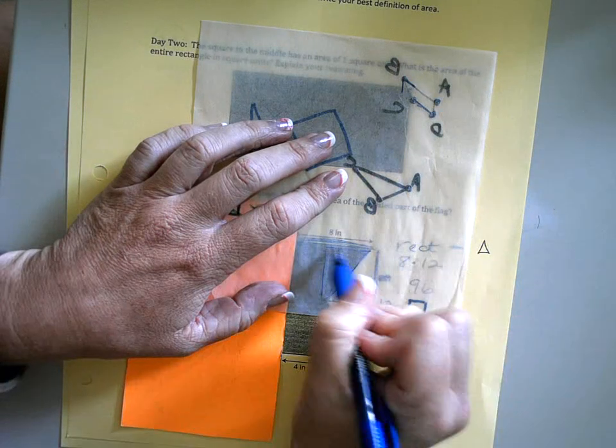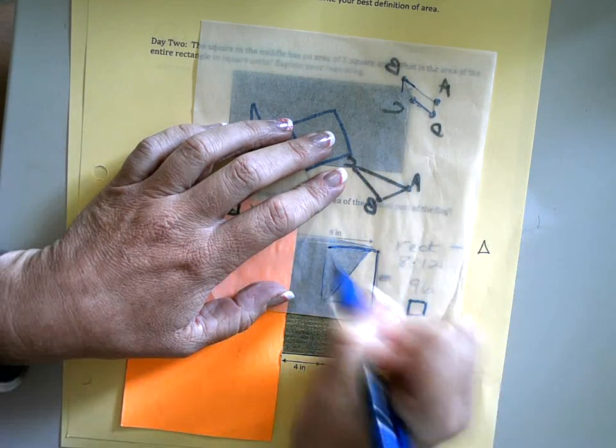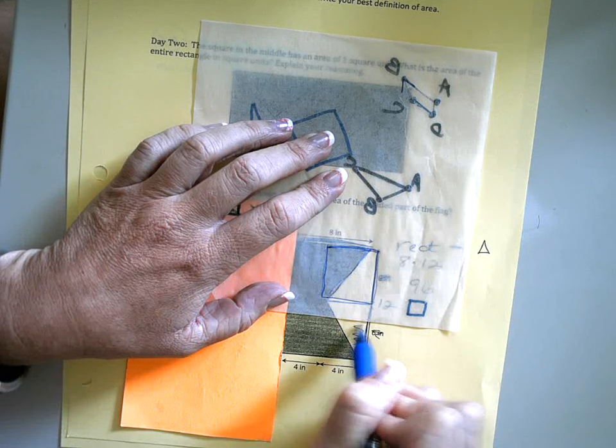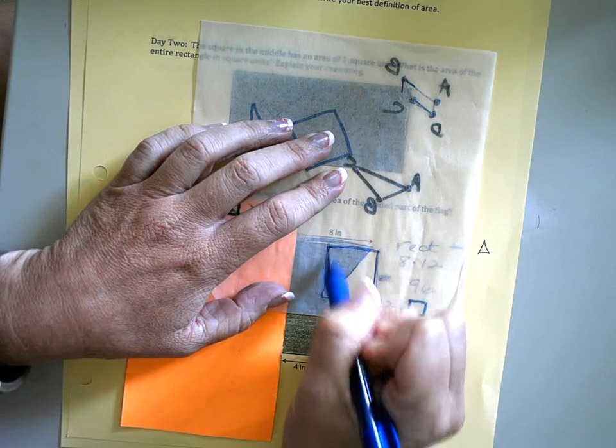What we end up with is this rectangle here that we're not gonna use. So we took this triangle here and we moved it up.